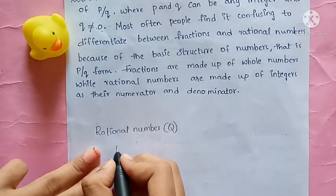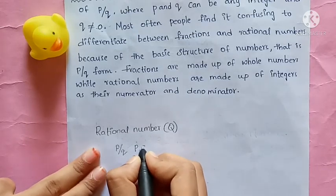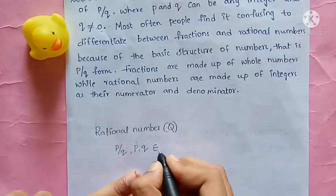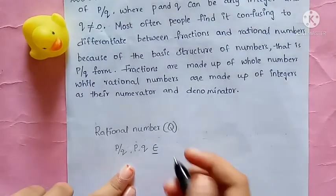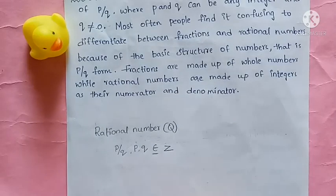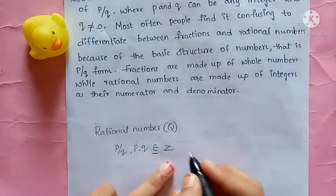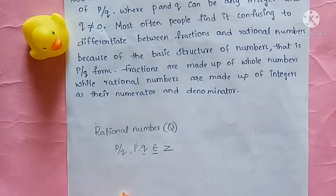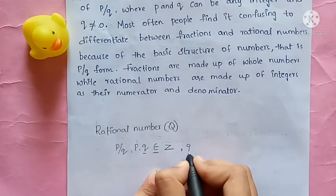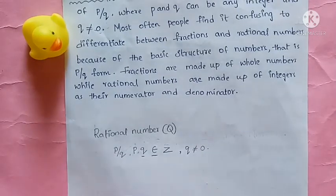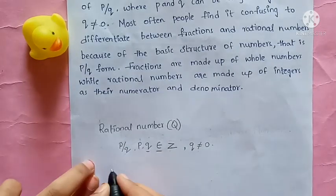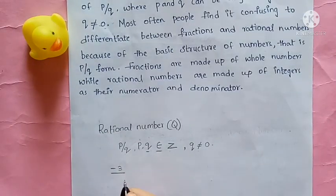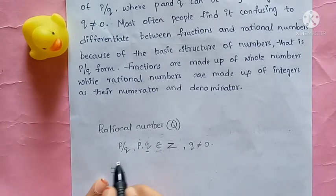So rational numbers are in the form P/Q, where P and Q belong to Z (integers), and Q must not equal 0. For example, taking the integer −3 over 6 — this is called a rational number, since both numerator and denominator are integers.